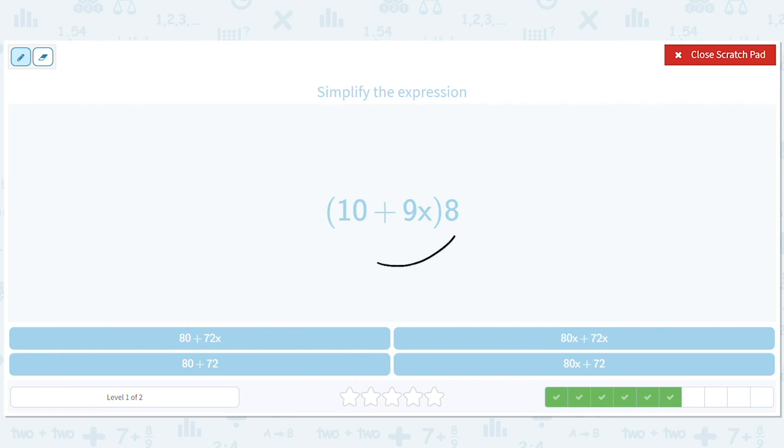Okay, so we have 8 times 10, 8 times 9x. So we have 10 times 8 plus 9x times 8. So this is 80 plus, we can put the 9 and the 8 together because it's a times, so that's 72x.